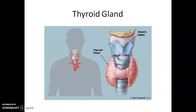The thyroid gland is composed of follicles and stromal tissues. Each thyroid follicle is composed of follicular cells enclosing a cavity. These follicular cells synthesize two hormones: Thyroxine T4 and T3.